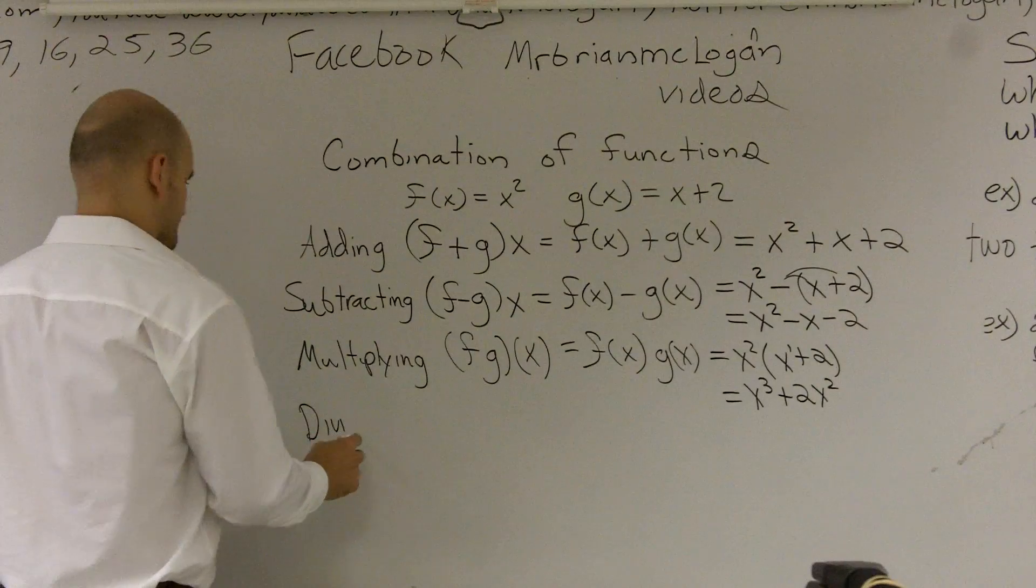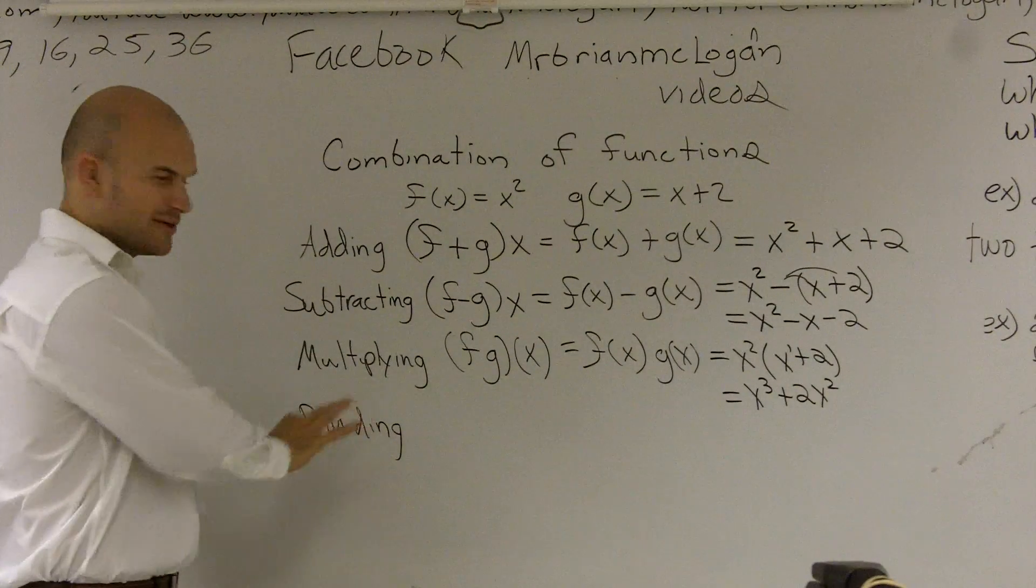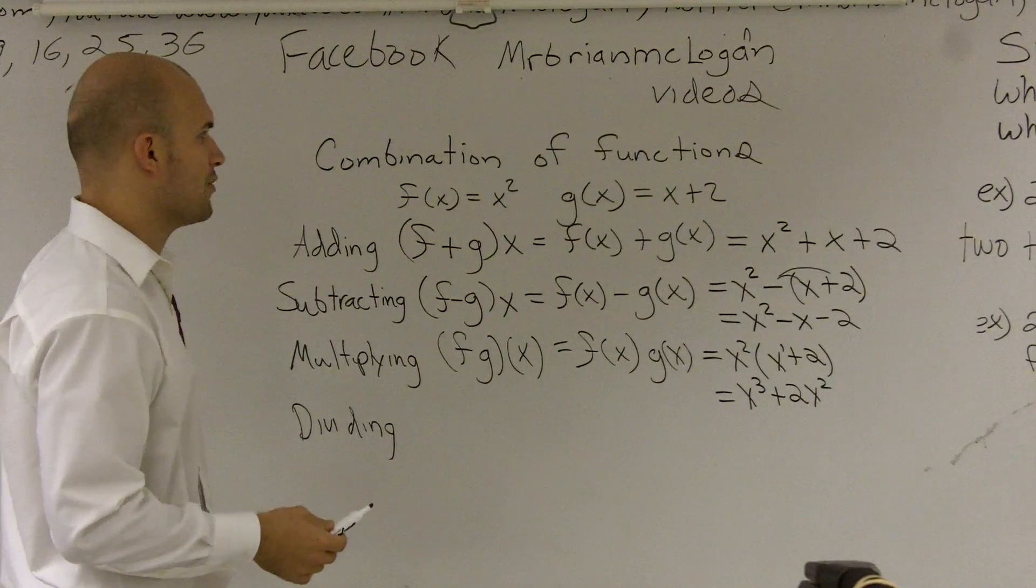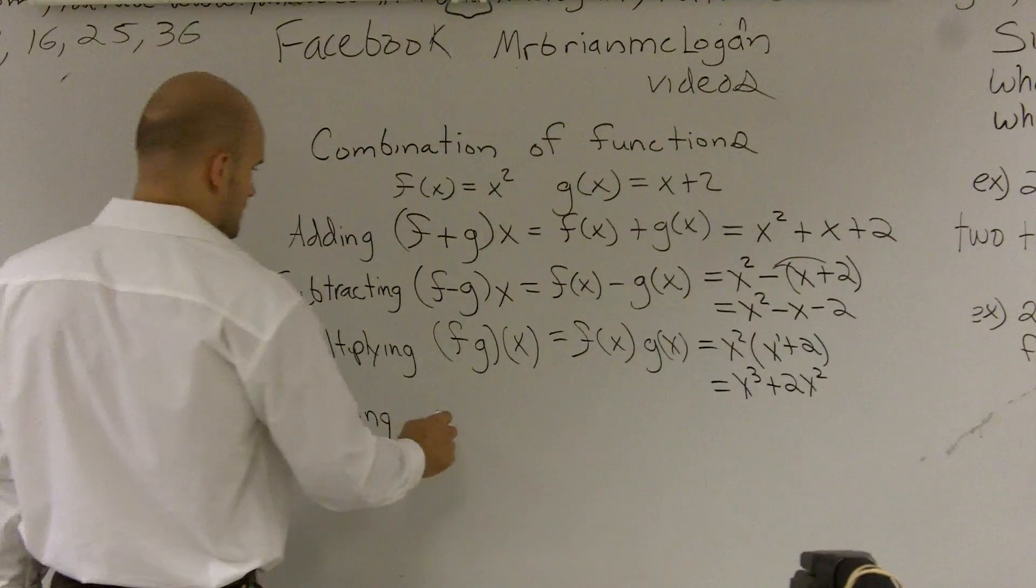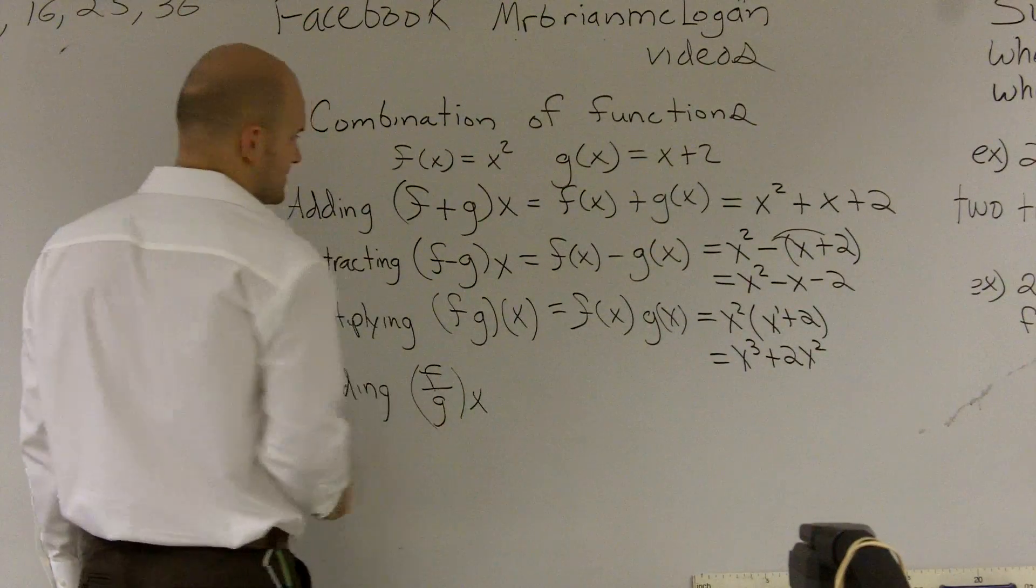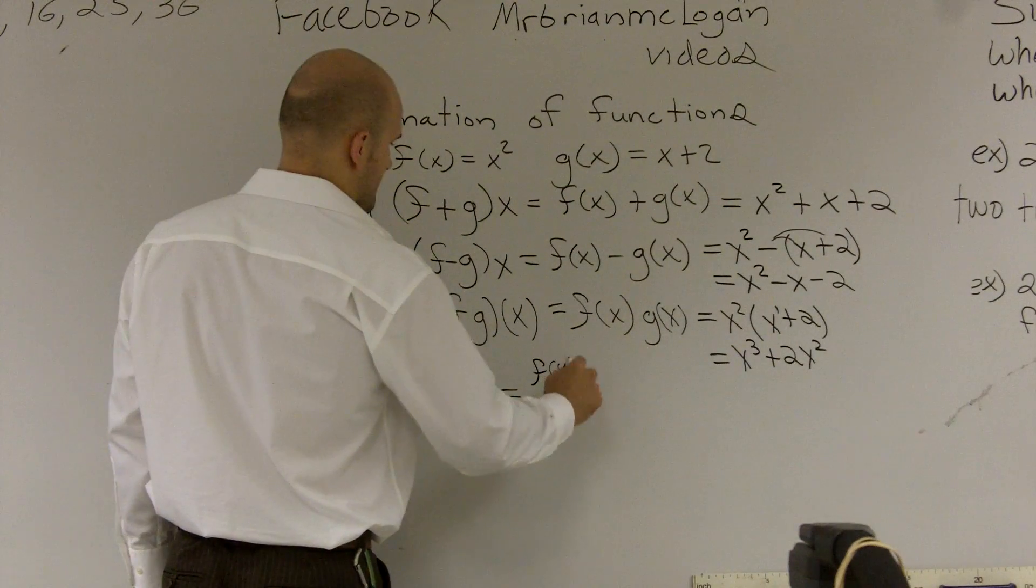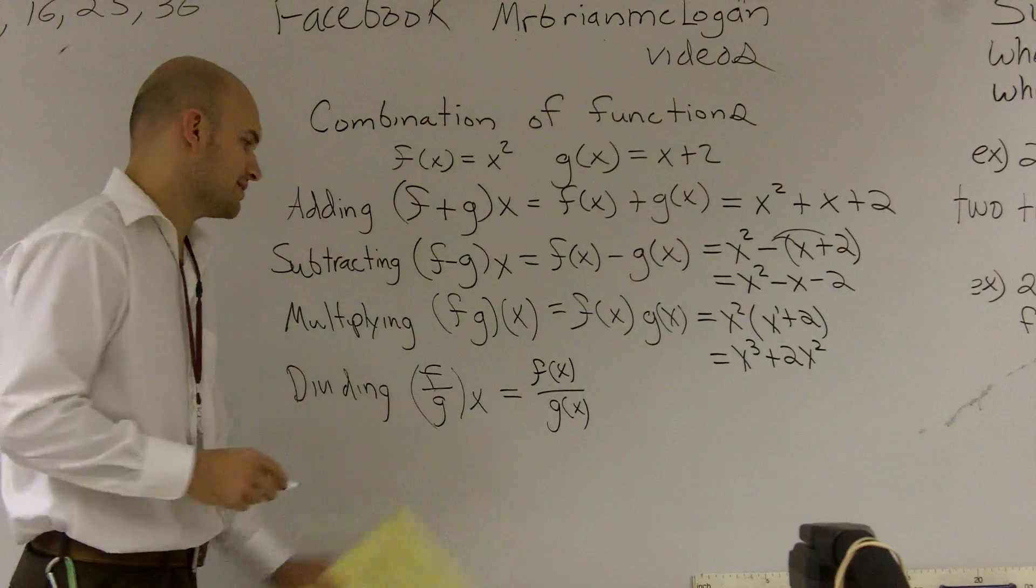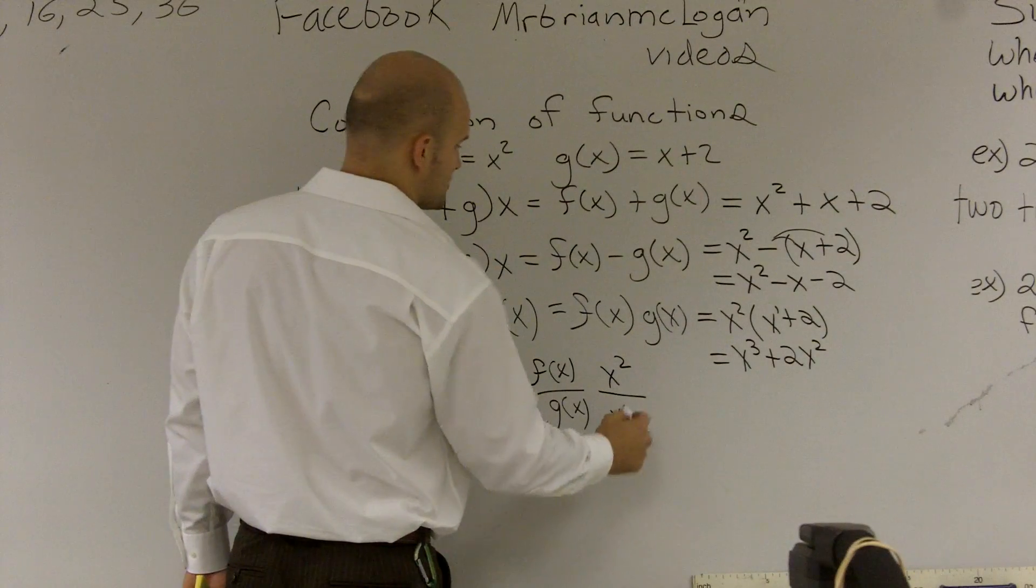Dividing. A lot of times with dividing we can't really reduce it so much anymore. So what we look into is finding the domain as well. So that would be f of g of x, and that's going to be f of x divided by g of x. So now when I look at this problem, I'm just going to take my f of x, which is x squared, and put it over x plus 2.